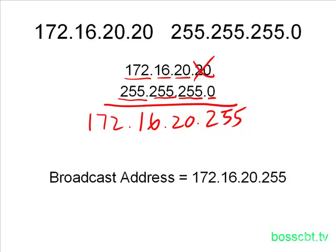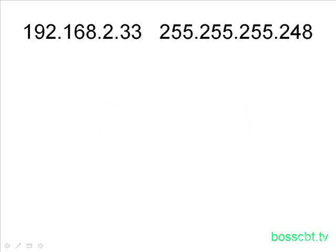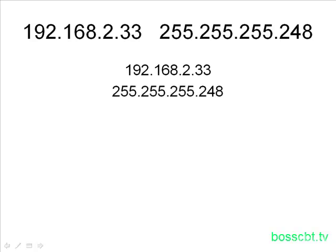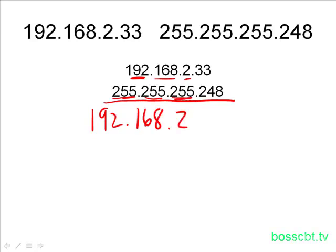Those two examples were relatively easy because the subnet masks were composed of only 255s or zeros. Let's look at a harder example: 192.168.2.33. This subnet mask is different because it doesn't have only zeros — until we get to that last octet. The first three octets have 255, so we copy those values down. But the fourth octet doesn't equal 255 and doesn't equal zero, so we need to take a few additional steps.